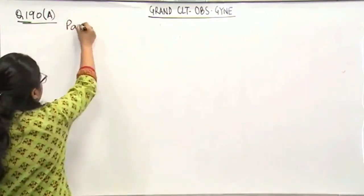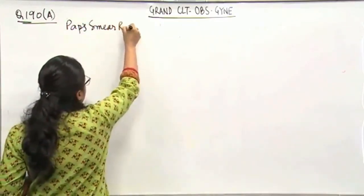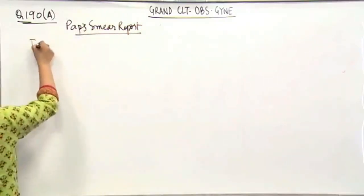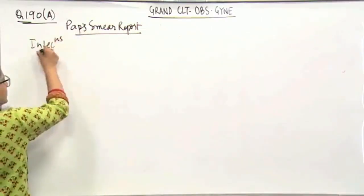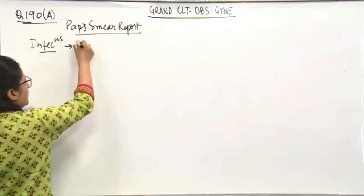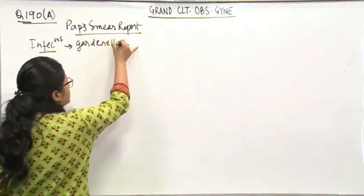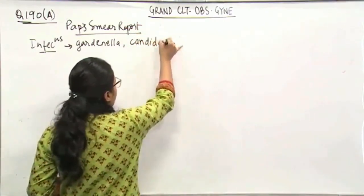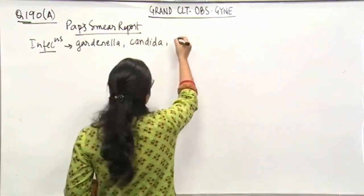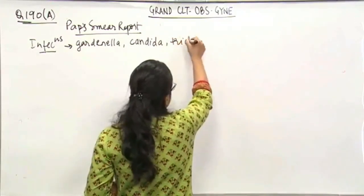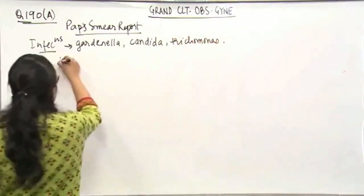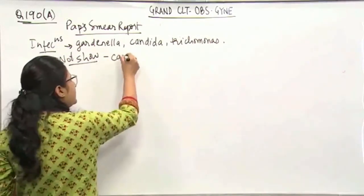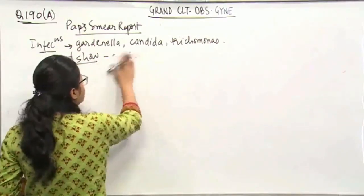What the pap smear report can show. Pap smear report can show infections, it can show Gardinella, it can show Candida, it can also show Trichomonas, but what it will not show is Chlamydia.